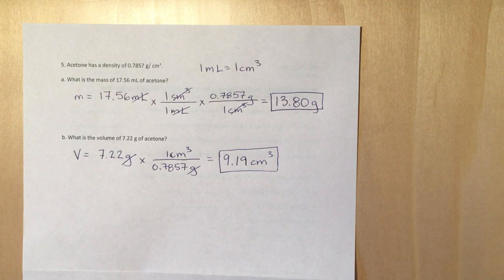You need the other conversion factor, 1 milliliter equals 1 cubic centimeter. So that's what I use first to cancel out my milliliters to cubic centimeters. Then I can use the density and multiply that, canceling out the cubic centimeters giving me the appropriate answer.